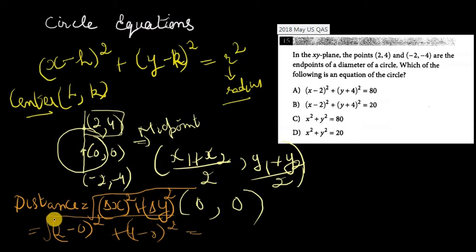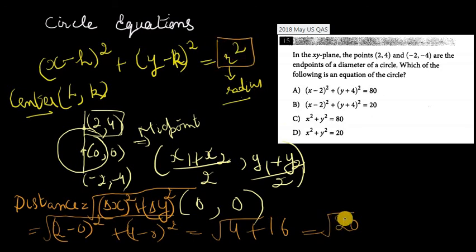This is going to be 2² is 4 plus 4² is 16, and the square root of that would be the square root of 20. And so in the equation, obviously we have an r², so when you take the square root of r², it's going to be 20.